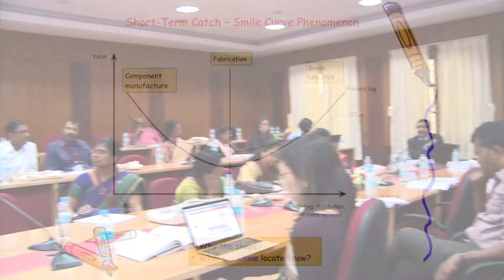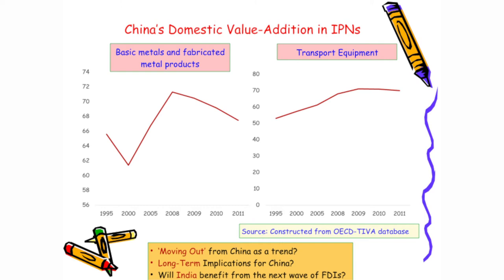If we look at the current scenario using OECD data for base metal and fabricated metal products, comparing 1995, 2000, and 2008, it shows the classic smile curve. But if you look from 2008-09 onwards, the curve doesn't look like a U-shaped curve anymore — it looks like a slanting curve. If you look into transport equipment, there again for the last 2-3 years, it is actually showing a slowdown.